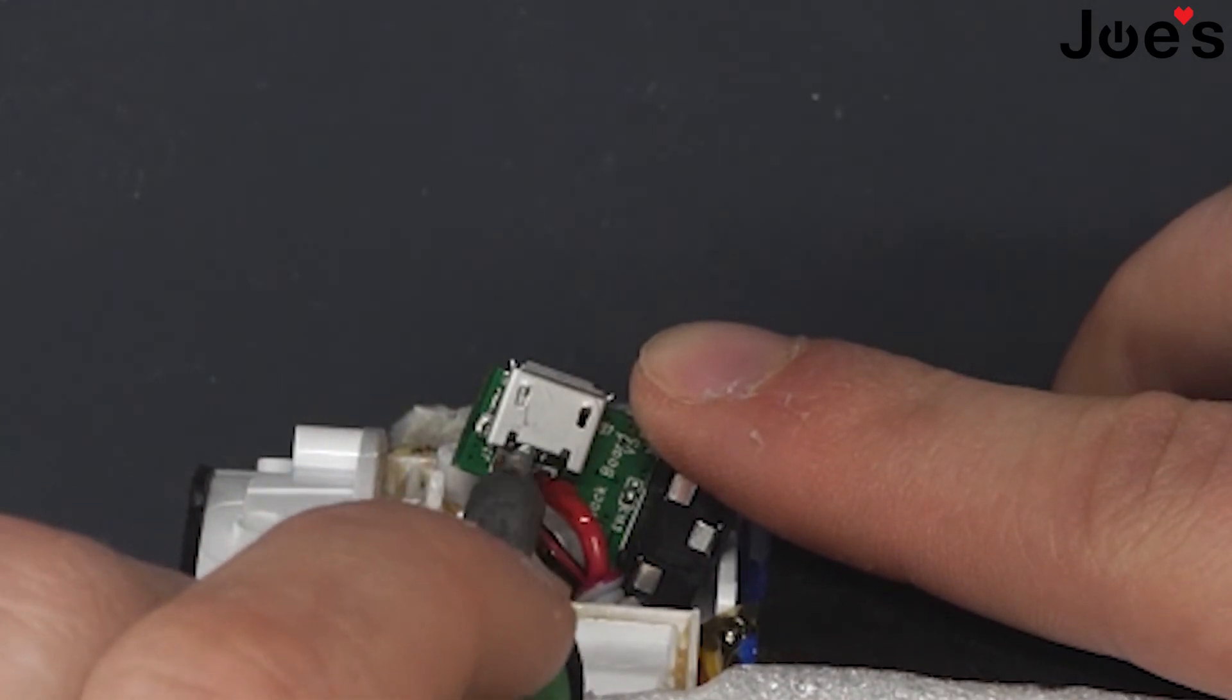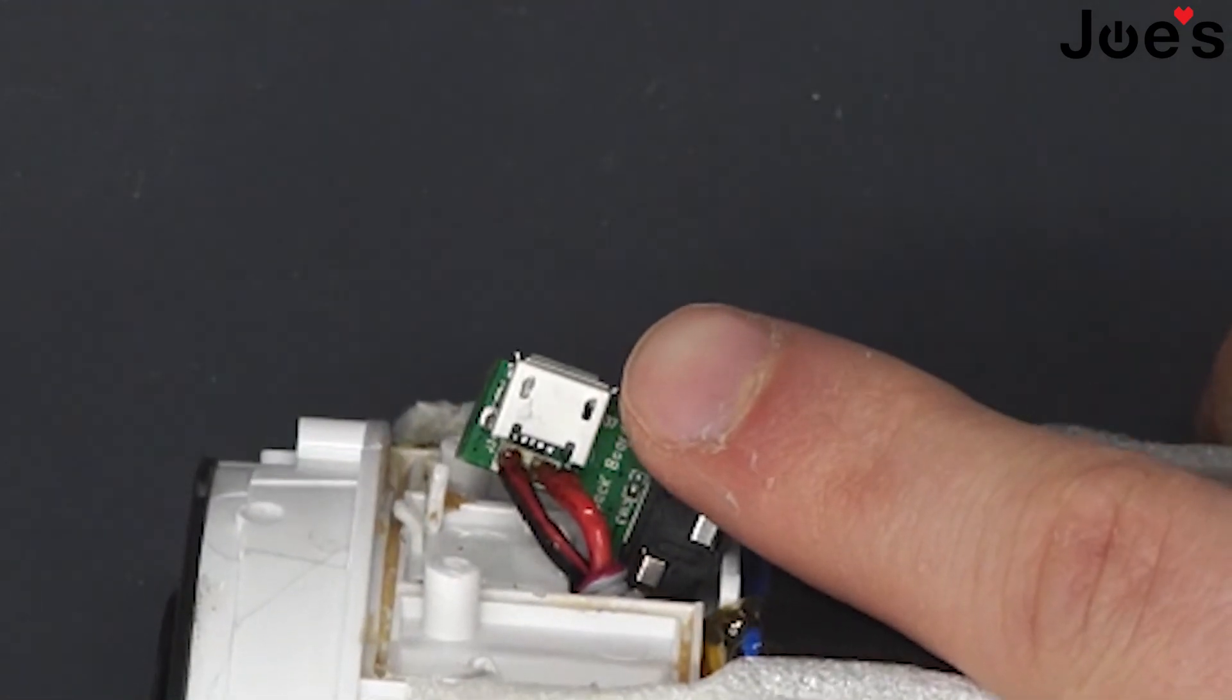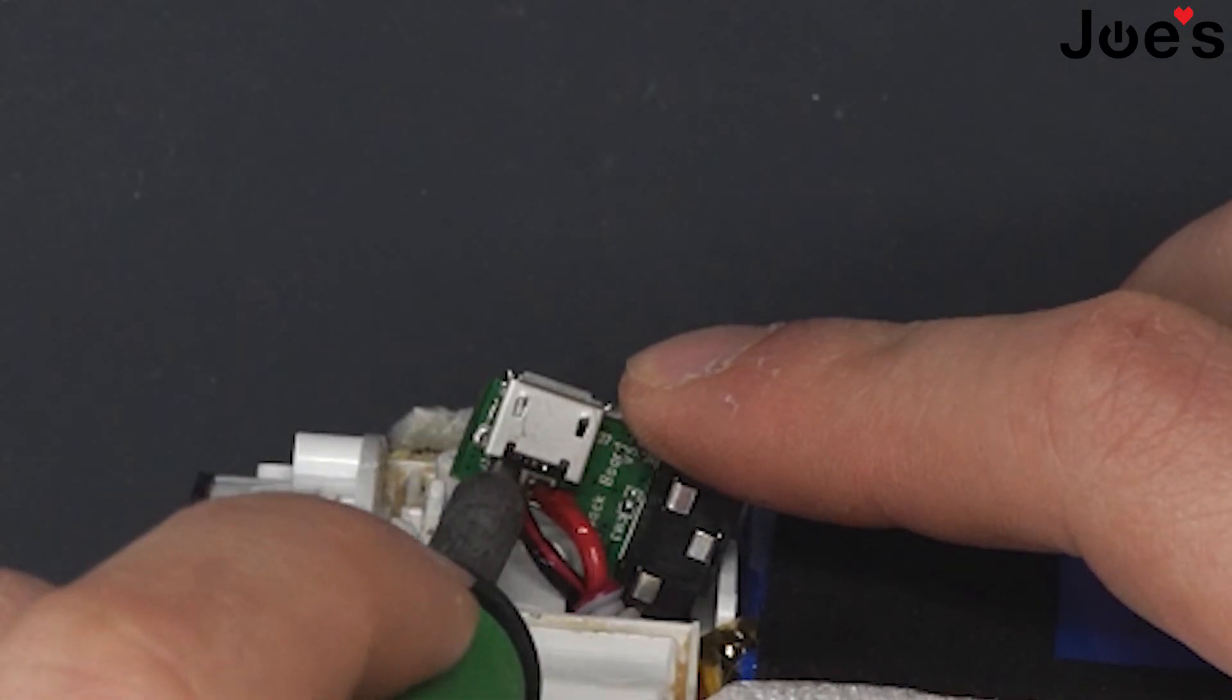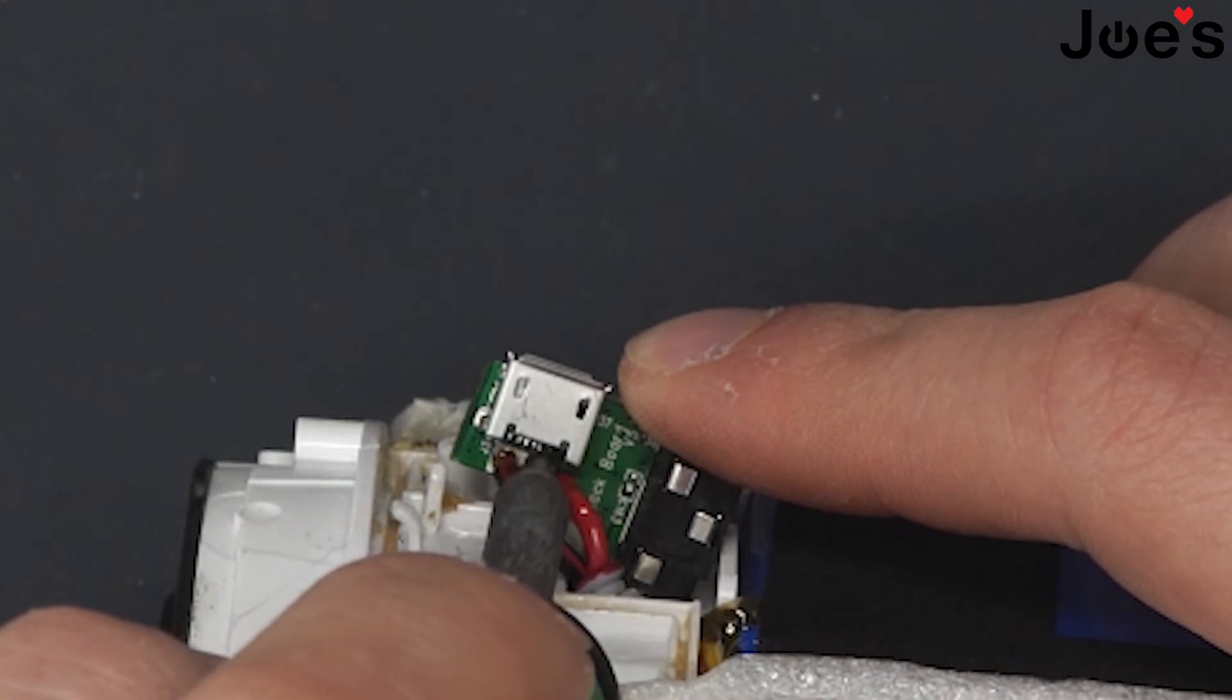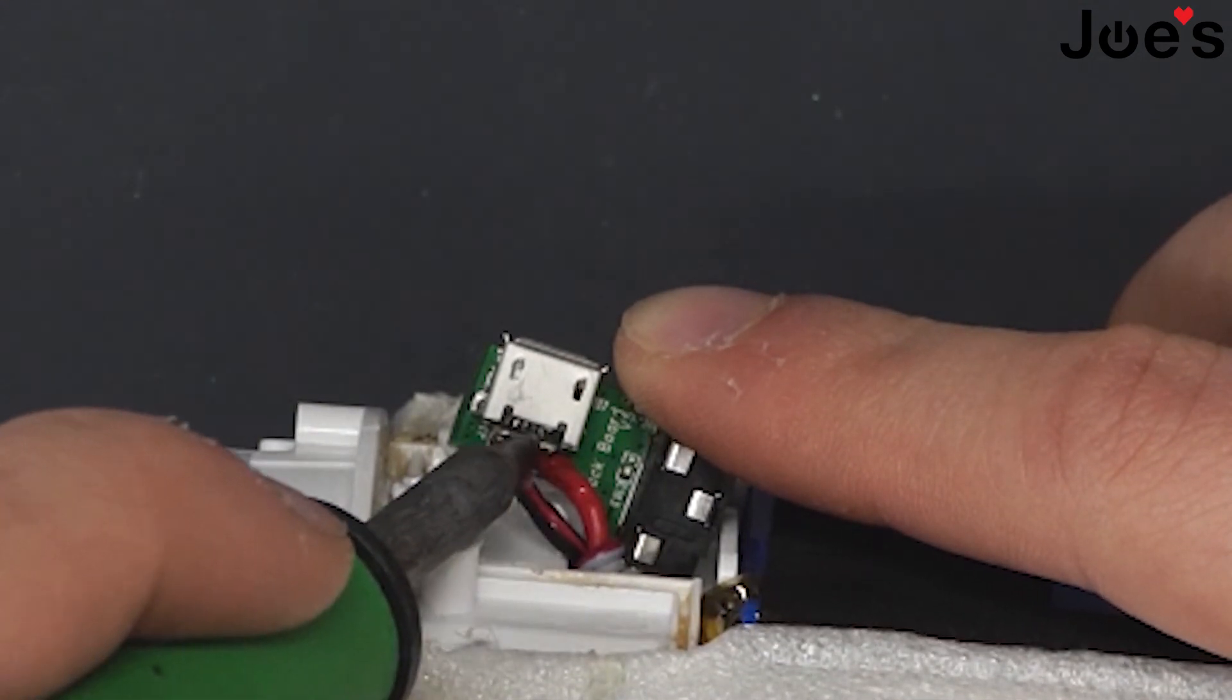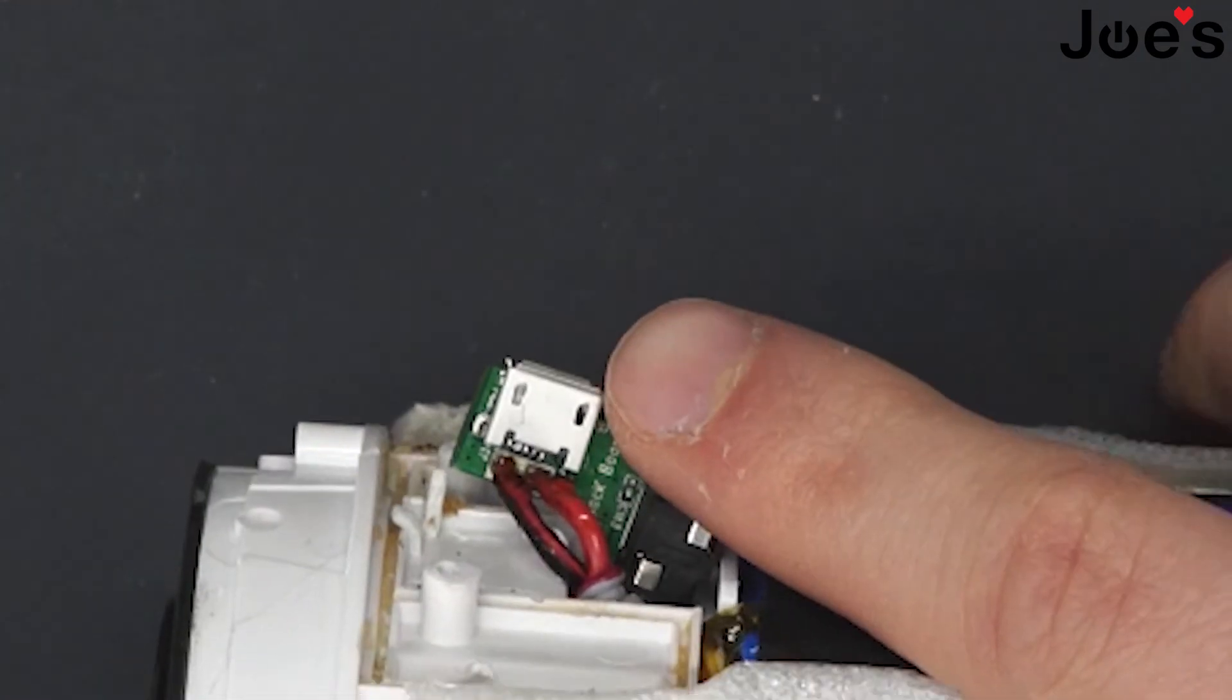If you bridge two on accident, it's not too big of a deal. You just slice the connectors to unbridge them.